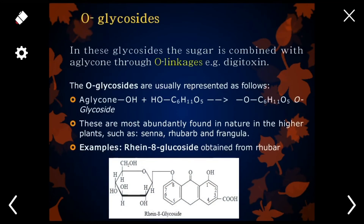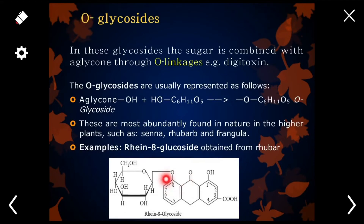O-glycosides are glycosides in which the sugar portion and the non-sugar portion are connected via an oxygen bond. Here we have an O-oxygen linkage, so that's why it is called an O-glycoside. This example is Rhein-8-glucoside and it is present in rhubarb.